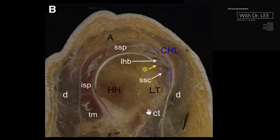Let's look closely at the anatomy in section B. H is the humerus head, SSP is the supraspinatus muscle and tendon, long head of biceps tendon. The blue mapped area is the coracohumeral ligament. This coracohumeral ligament is shallow and flat. Most doctors are familiar with this anatomy.